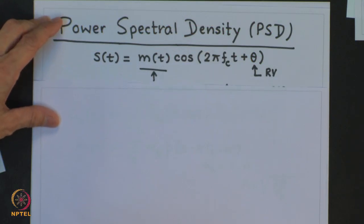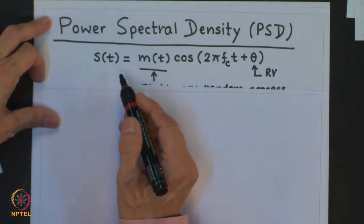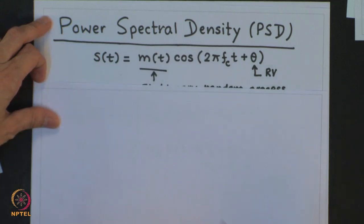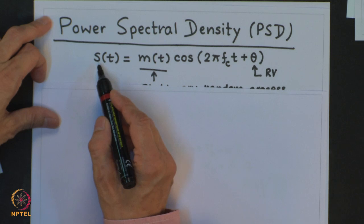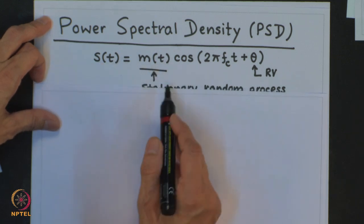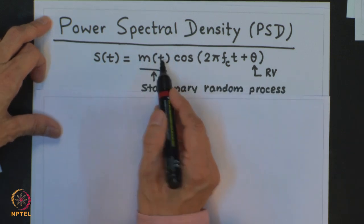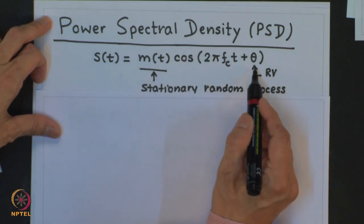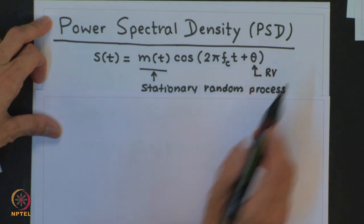The last thing we need to do when evaluating different modulation schemes is to evaluate the power spectral density. In general, if I have a signal S(T) which is a product of a stationary random process and a cosine function where theta is a random variable, then from our study in random processes, the power spectral density for S(T) is given in terms of the power spectral density of M(T) and the carrier frequency F_C.